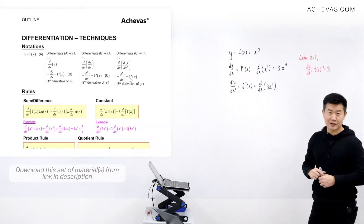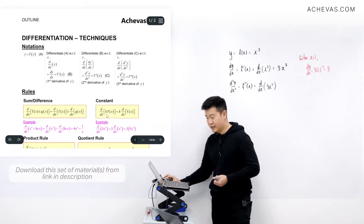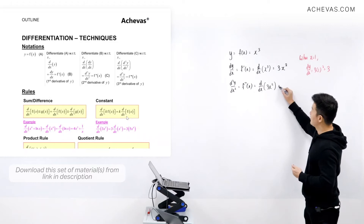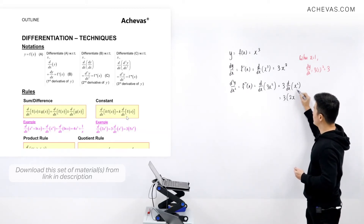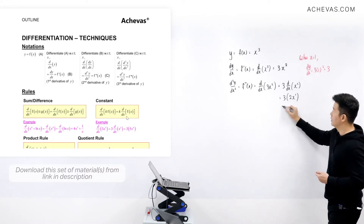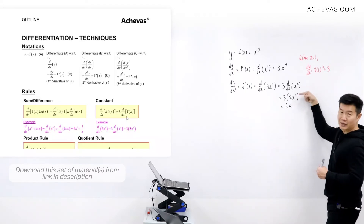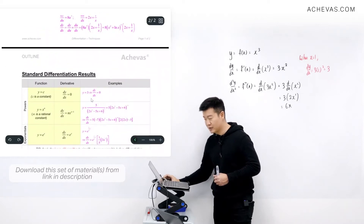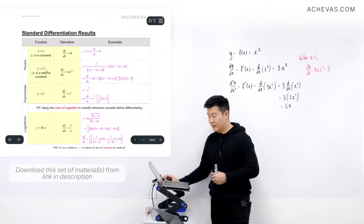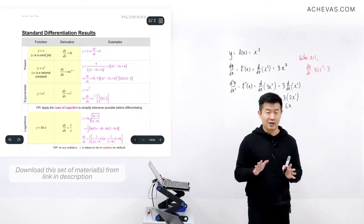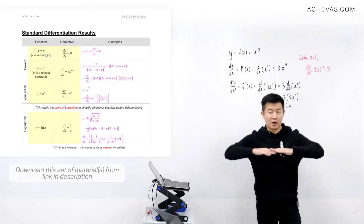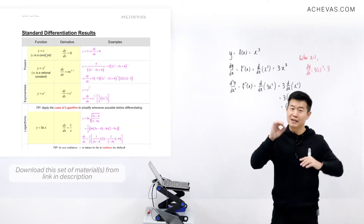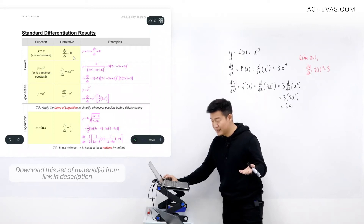So how do we differentiate 3x²? The 3 is a constant, so we use the constant multiple rule: if it is a constant multiplied by a function, then it is the constant multiplied by the differentiation of that function. This gives us 3 times the differentiation of x², which is 3 times 2x to the power of 1, giving us 6x. We got this using the table of results on the second page. For instance, if y equals c where c is a constant, the graph is a horizontal line with gradient 0, which is why dy/dx equals 0.